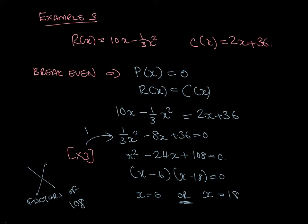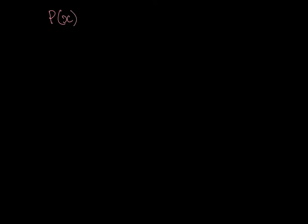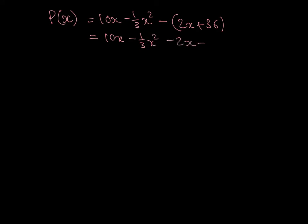Remember, if I had a negative value as one of my x's, that is not possible. Now, the quantities 6 and 18 are the two quantities that allow break-even to happen. My profit function is the difference between revenue — 10x minus 1/3 x squared — minus cost, which is 2x plus 36. And that is what my profit function looks like.